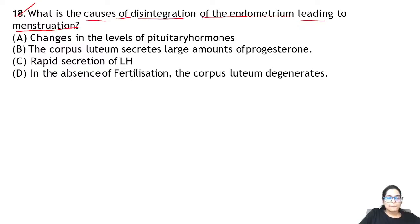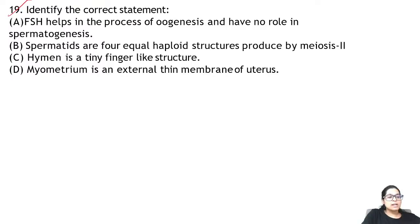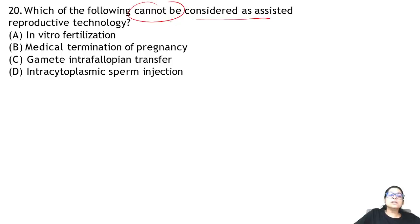Zoology Questions 18 and 19: what is the cause of disintegration of the endometrium causing menstruation? Question 19: what is the correct statement about spermatids? Spermatids are 4 equal haploid structures formed from meiosis 2. Answer for 19 is B.